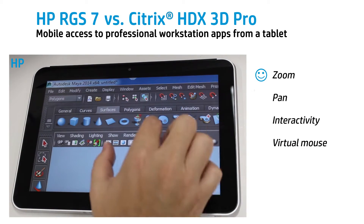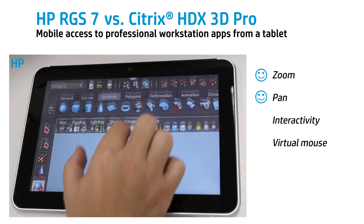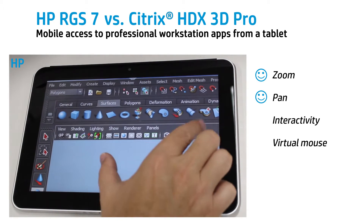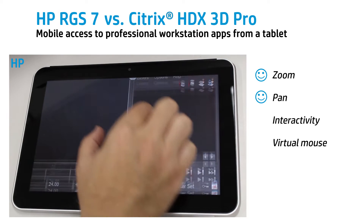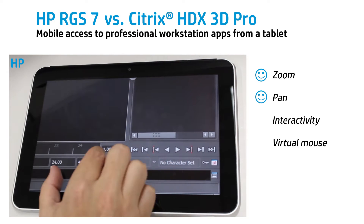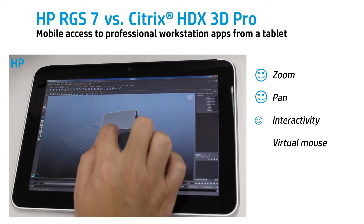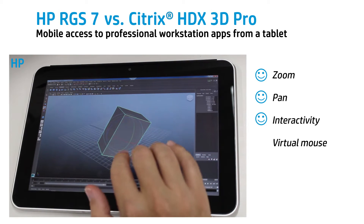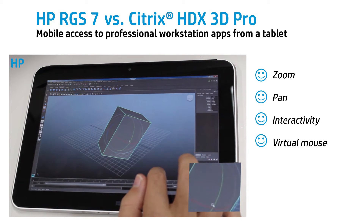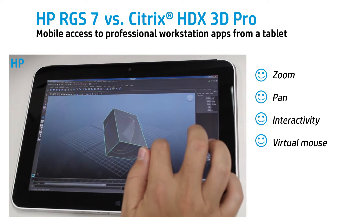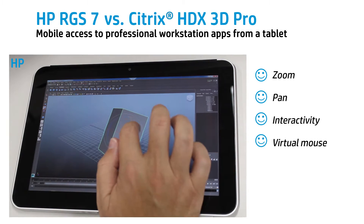RGS can zoom and pan with one fluid gesture — a two-finger pinch or spread. No buttons, toolbars, or special settings; just reach out and control the screen as you would expect. This makes it quick and easy to access all menus and buttons. When you're not zoomed in, a quick tap switches to the virtual mouse so your fingers don't block your view, making it easy to select items and use pulldowns.